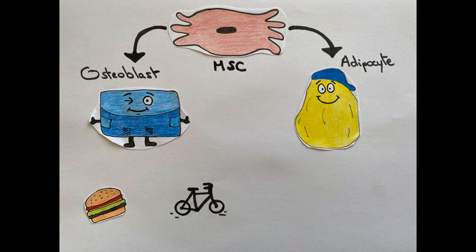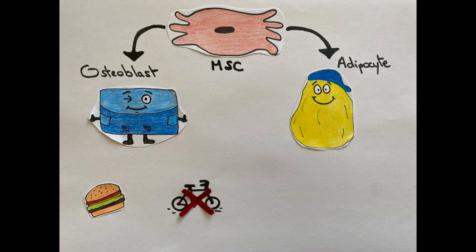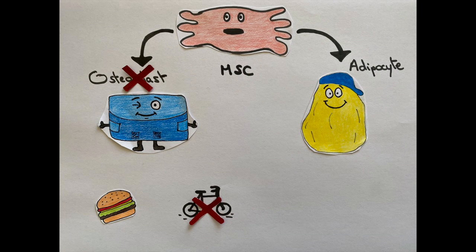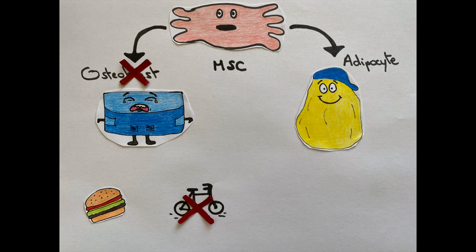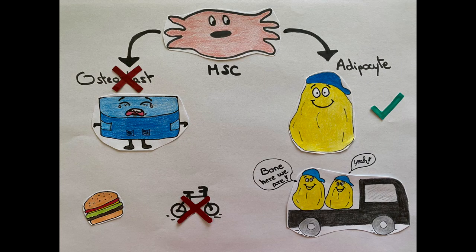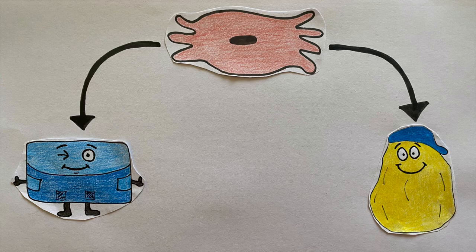If you eat fast food every day and do no exercise, mesenchymal stem cells will rather turn into adipocytes over osteoblasts, leading to a lot of fat tissue but little bone formation.